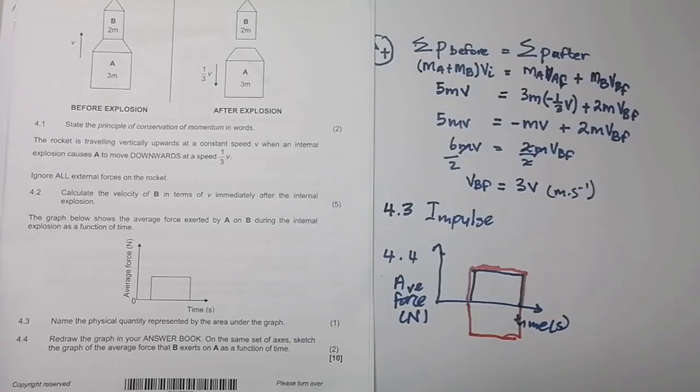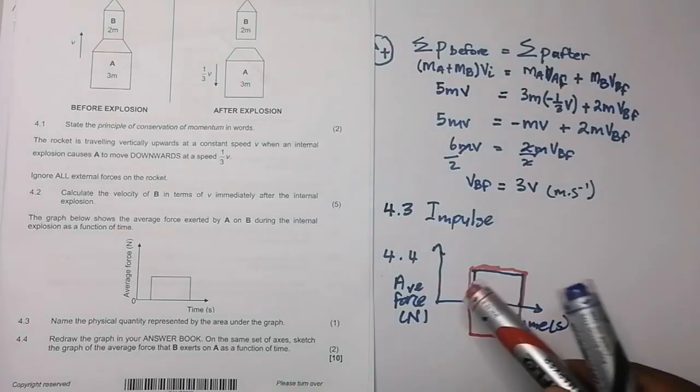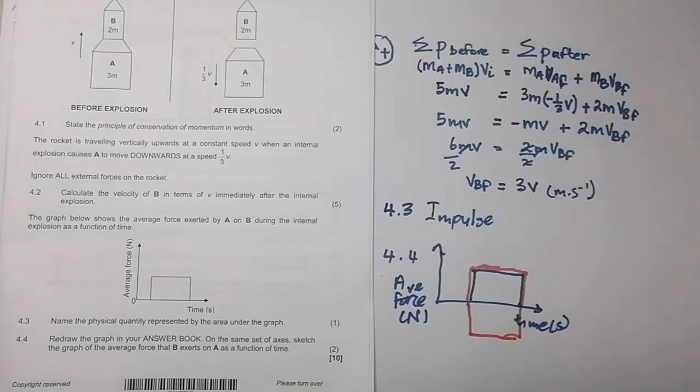If you wanted to be really pedantic about it, you can draw the other graph just underneath this one, because that force is equal but in opposite direction. You can draw the other force just underneath to show the direction, because force is a vector.